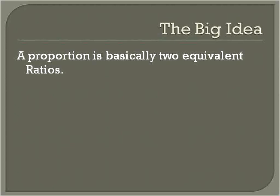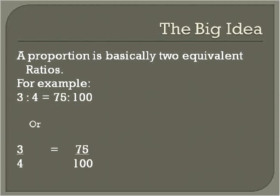The main big idea about proportions is this: A proportion is basically two equivalent ratios, or two equivalent fractions if we're writing the ratios in fractions. Here's an example: 3 to 4 is equal to 75 to 100. These are two equivalent ratios, so that means that this is a proportion. We can also write them as two equivalent fractions. 3 over 4 is equal to 75 over 100. That's the main idea about proportions.